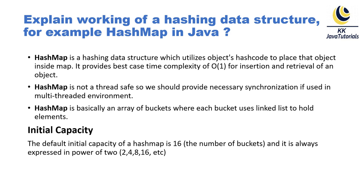HashMap is a hashing data structure which utilizes an object's hash code to place that object inside the map. It provides best-case time complexity of O(1) for insertion and retrieval of any object. HashMap works on the hashing algorithm, and when you try to insert or retrieve any element, the time complexity would be O(1).